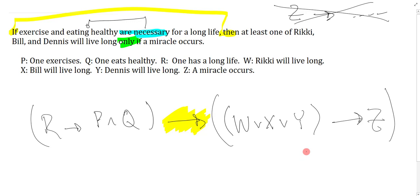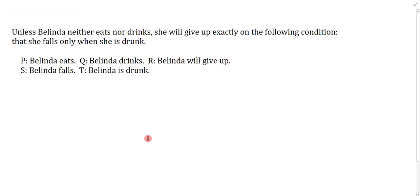Last question: Unless Belinda neither eats nor drinks, she will give up exactly on the following condition that she falls only when she is drunk. Okay, what's going on? Doesn't matter if you understand the sentence or not, you just need to be able to break it down by keywords. Unless is a disjunction or conditional depending on how you look at it, but no matter what it's a binary connective. When we open with the binary we always look for the associated comma, and that tells us the main break.